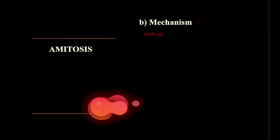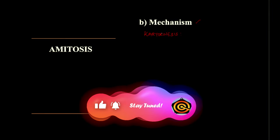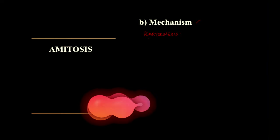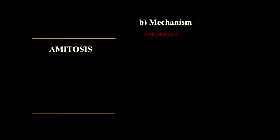Coming to the mechanism, there are two steps. The first is karyokinesis — 'karyo' means nucleus and 'kinesis' means division — so this is the division of nucleus. Here the nucleus will develop a constriction in the center, meaning a narrowing.